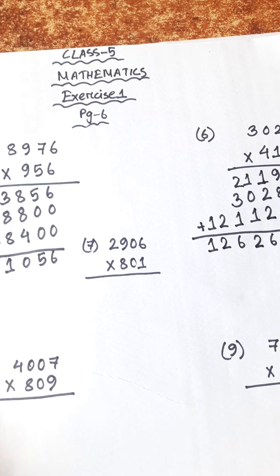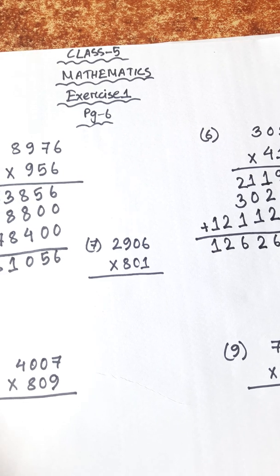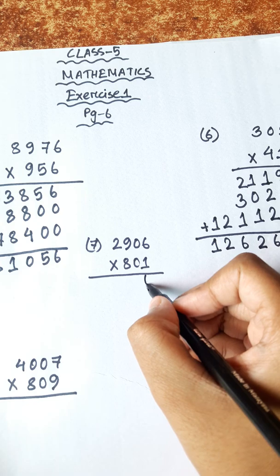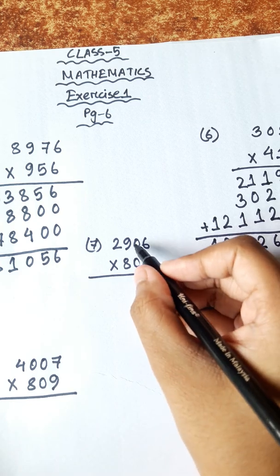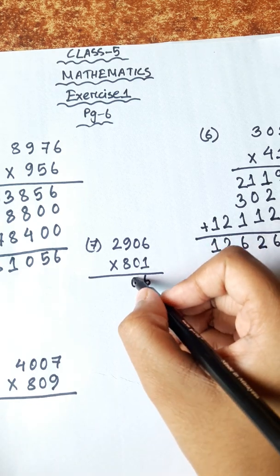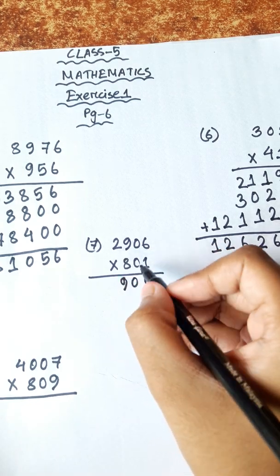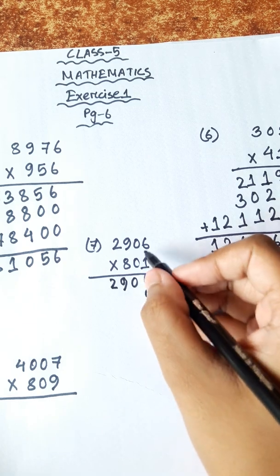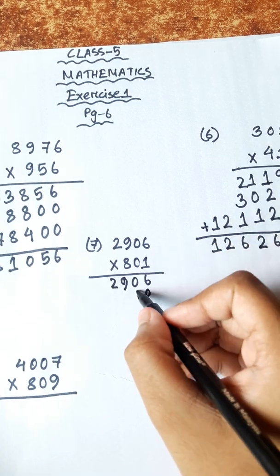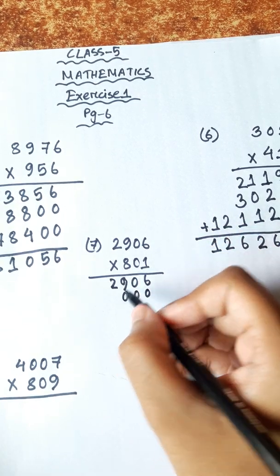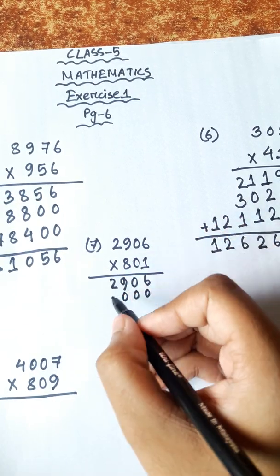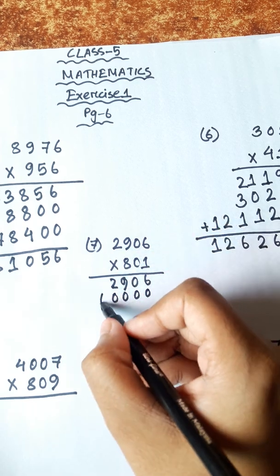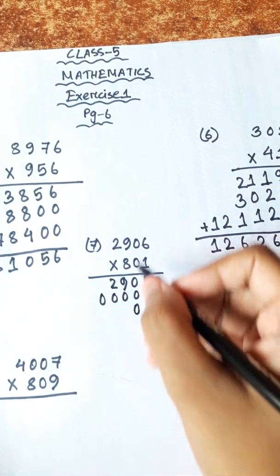Problem Number 7: 29060 × 801. Steps: 6, 1, 0, 6, 1, 0, 0, 9, 1, 0, 9, 2, 1, 0, 2. Then: 6, 0, 0, 0, 0, 9, 0, 0, 0, 2, 0, 0, 0.